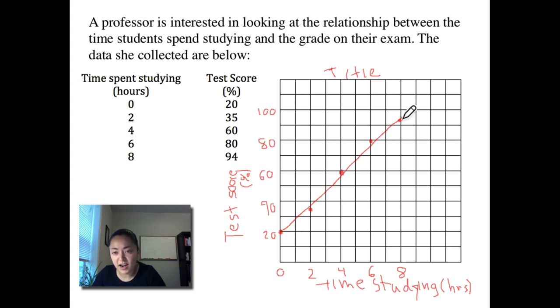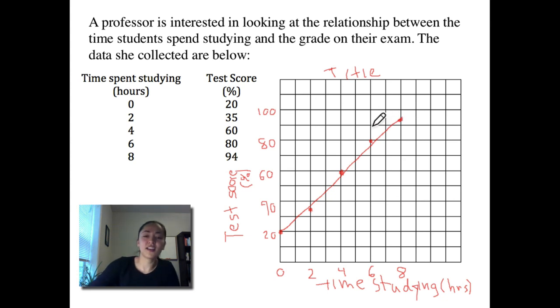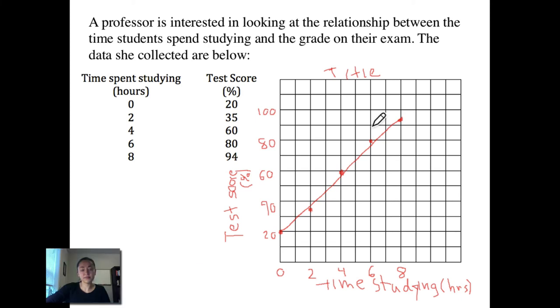No matter how hard students study, they never would get 100% — that's not true for BIO 1020 though. You can get 100%, you just gotta study hard. Hopefully you feel better about graphing.